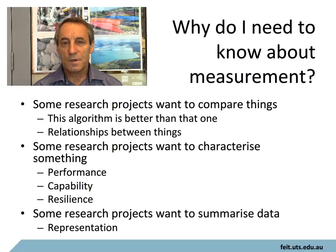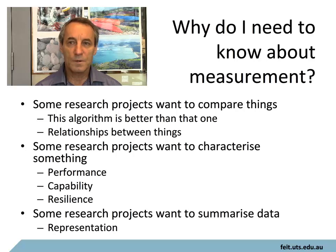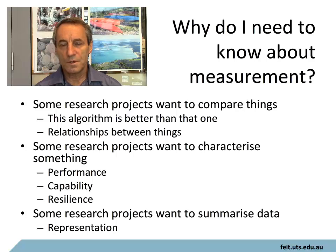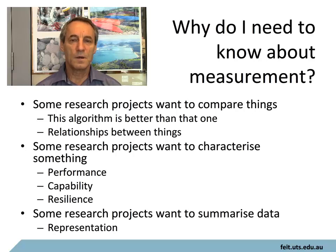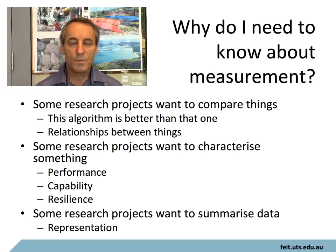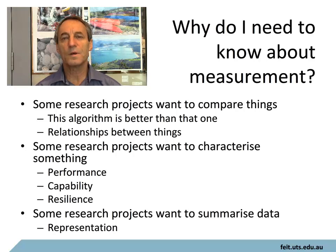Some research projects tend to want to characterize things. This is more typical of the classification sciences such as botany. But even in software engineering, we simply want to know what the characteristics of something are, and many of those characteristics we want to measure in some way. For example, in software development, we talk about burndown or velocity. What is that? How are we measuring that?